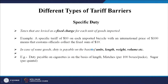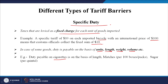Now, coming to different types of tariff barriers. One type is specific duty — taxes levied as a fixed charge. For example, a specific tariff of 10 dollars on each unit imported bicycle means customs officials collect a fixed sum of 10 dollars per cycle. In some cases, duty is payable on the basis of unit length, weight, or volume — for example, duty on cigarettes is based on length, matches per 100 boxes, and sugar per quintal.